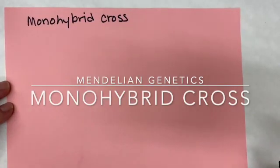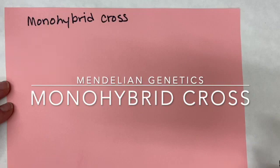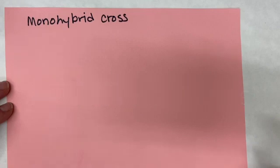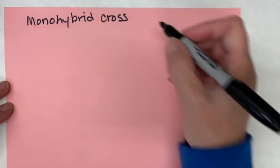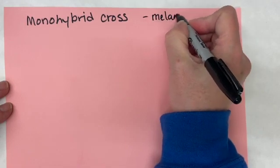Hi and welcome to a quick tutorial on how to do a monohybrid cross in Mendelian genetics. The first thing you need to do is pay attention to what gene you're dealing with. For this case we're going to have a simple gene that deals with whether or not you can make melanin.